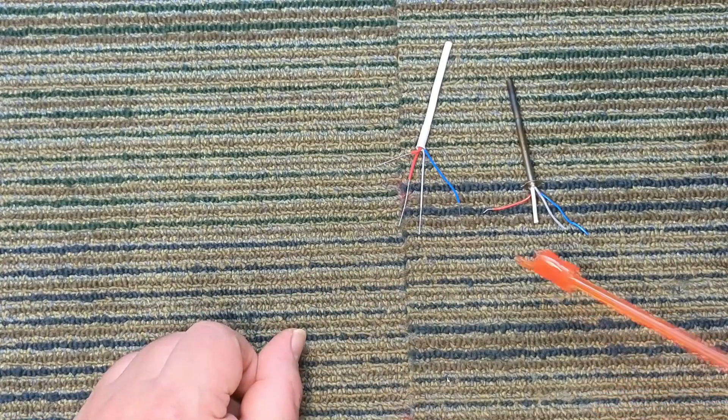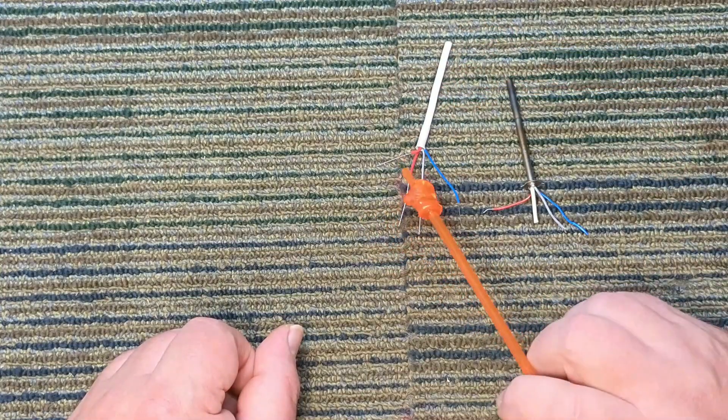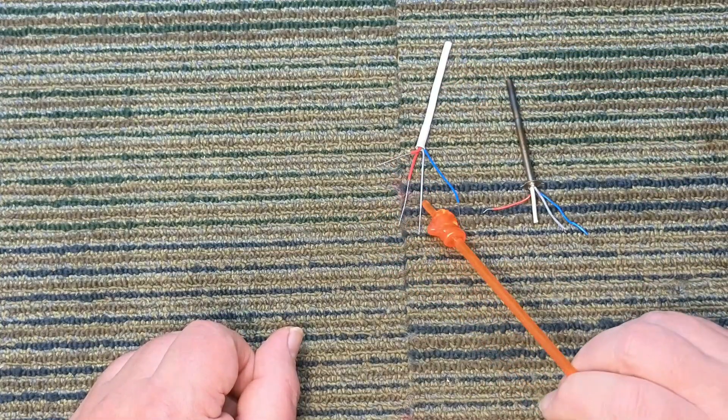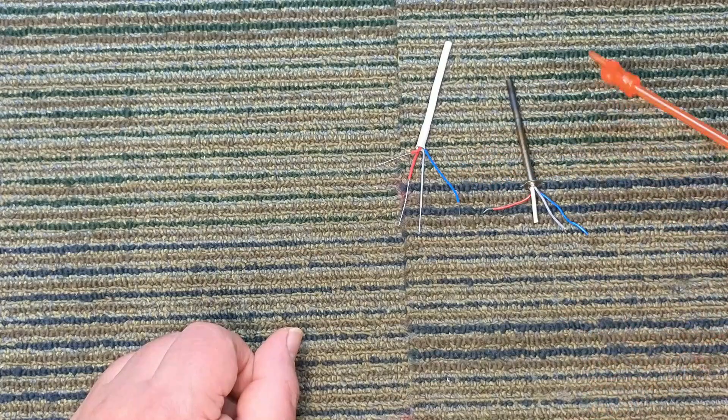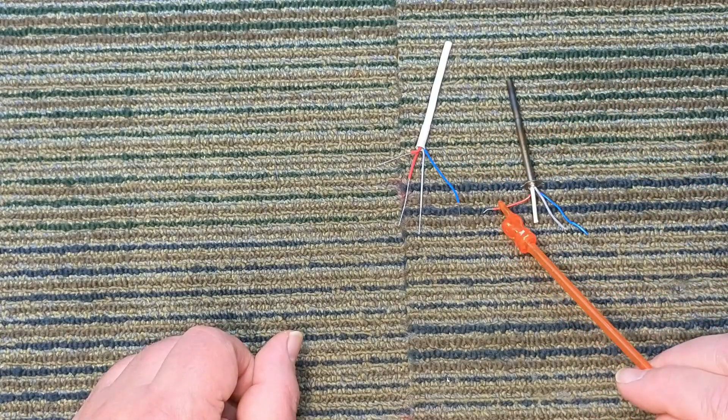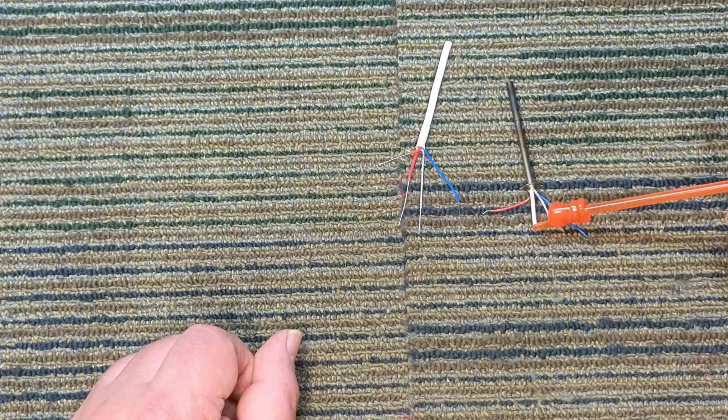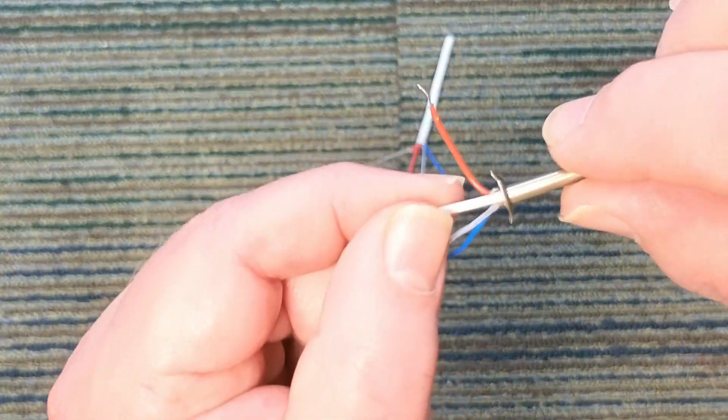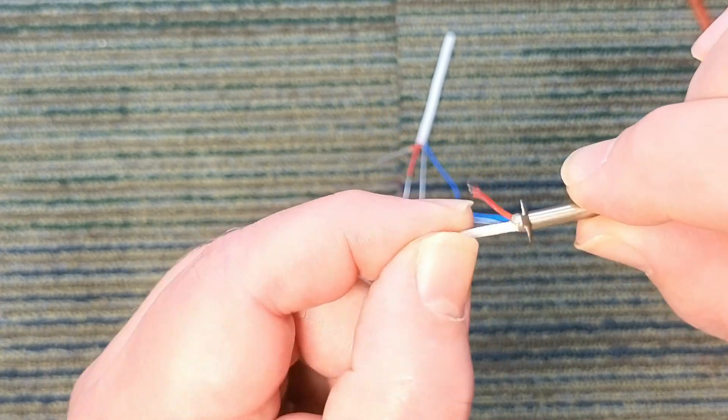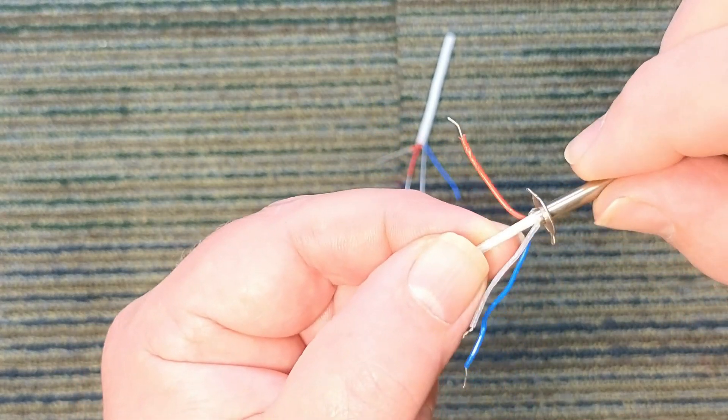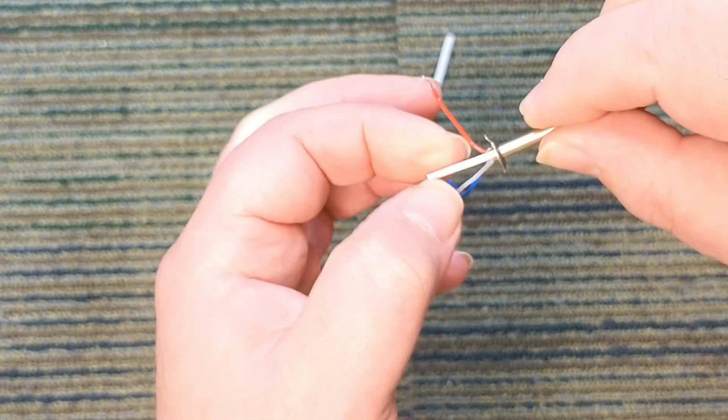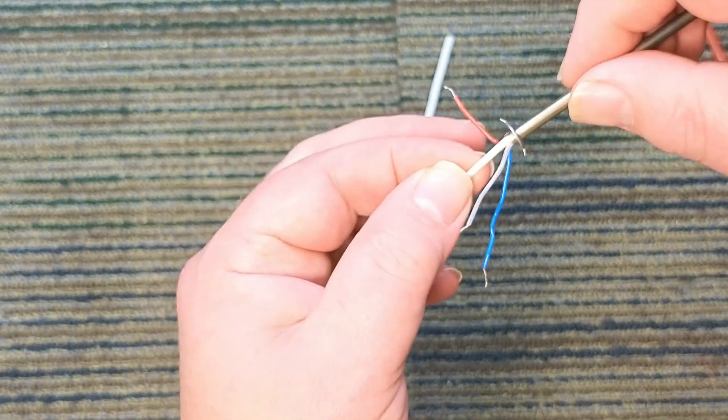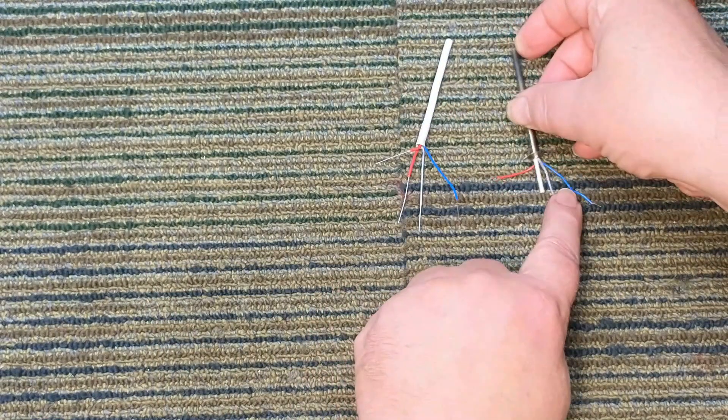So you can see the difference. The new one here has two red leads, a clear one and a blue one. The old one has one red, a shielded, this is actually insulated coating on it, and a clear and a blue.